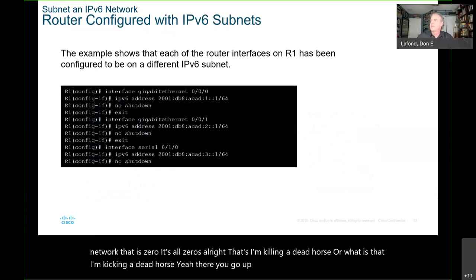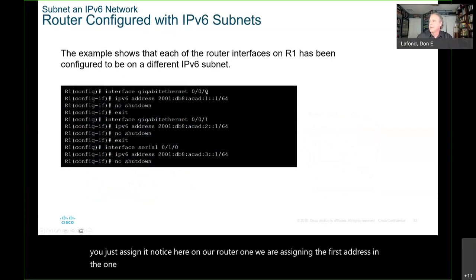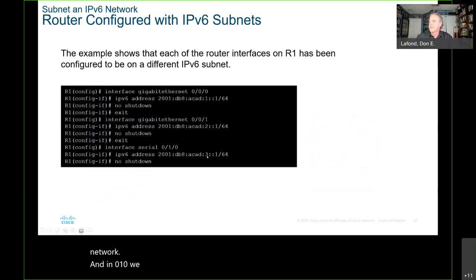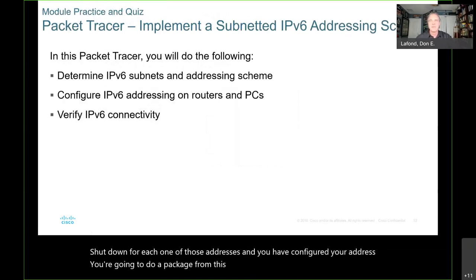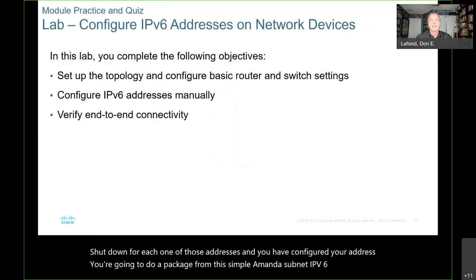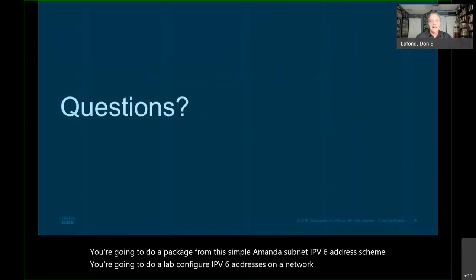Once you have your network, you assign addresses. On router one, we are assigning the first address in the 1 network on G0/0/0, the first address on the 2 network on G0/0/1, and the first address in the 3 network on G0/1/0. Make sure you type 'no shutdown' for each one of those. You're going to do a packet tracer on implementing a subnetted IPv6 address scheme, and a lab configuring IPv6 addresses on a network.